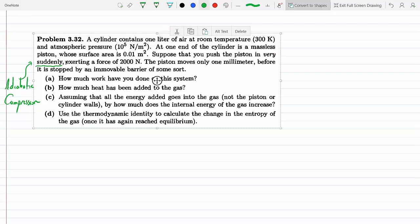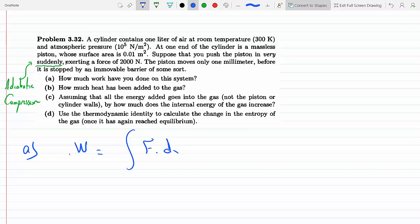As you know, work is equal to the integral of F·dx. We have a constant force here, so from x1 to x2 we have a constant force of 2000 Newtons. So this would be 2000 dx, and we're moving by one millimeter, so we're going from 0 to 0.001 meters.